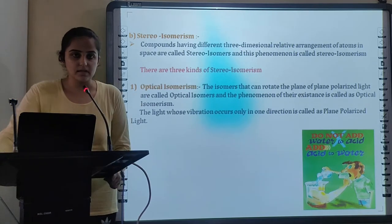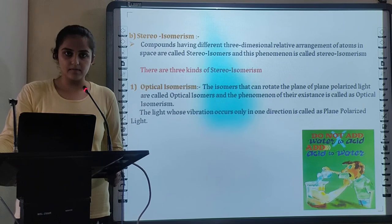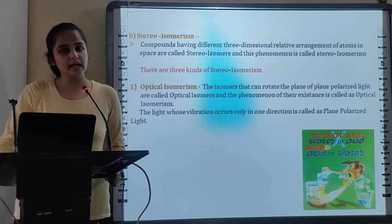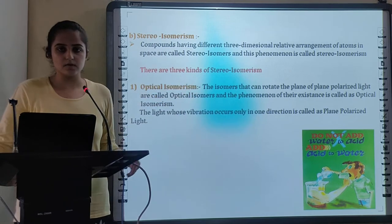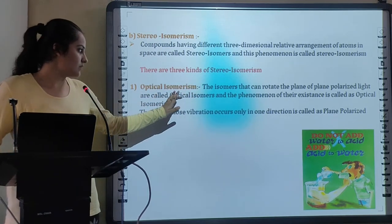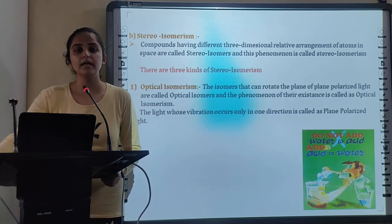Next is Stereo Isomerism. Again, there is difference in Relative Arrangement of Atoms or Groups but it is in three-dimensional form. According to this, there are three kinds of Stereo Isomerism. First is Optical Isomerism. Before talking about Optical Isomerism, I will speak about Plane Polarized Light.